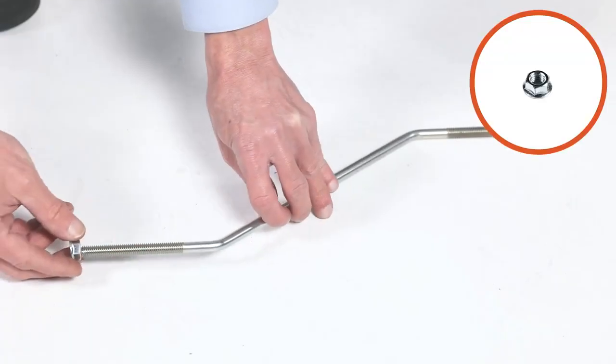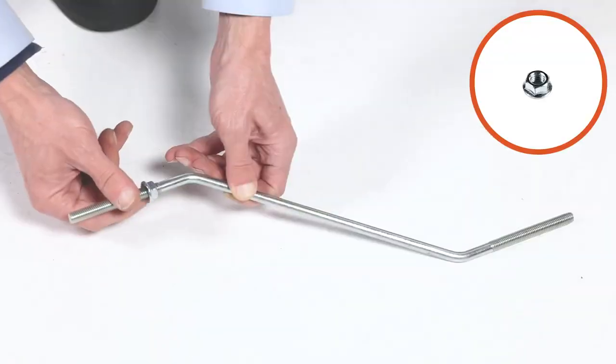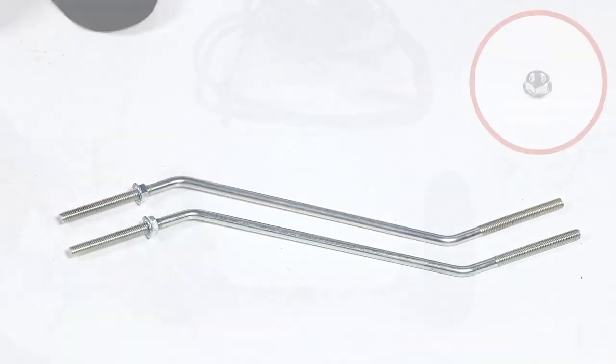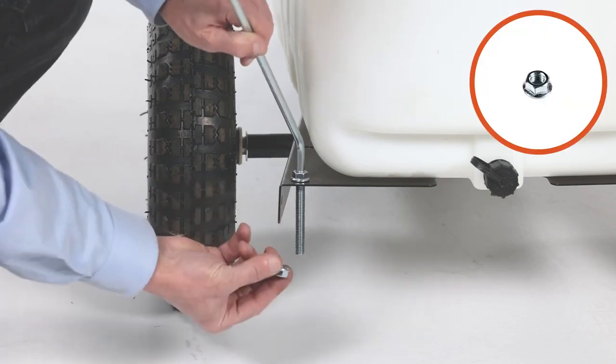Then thread a 3/8 inch whizlock nut, Part B, onto one side of each boom support, Part 2. Next, loosely secure each of them to the sprayer assembly with a 3/8 inch whizlock nut, Part B.